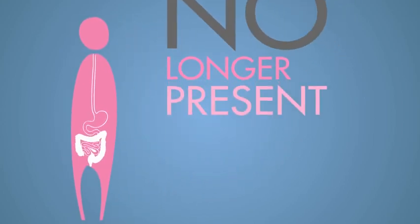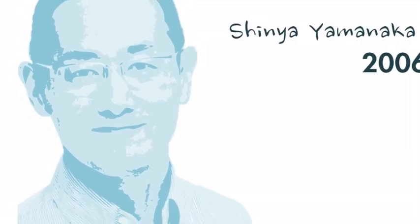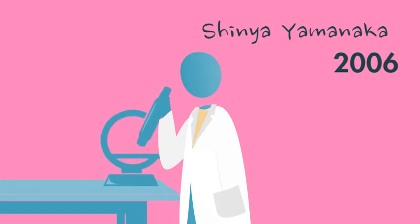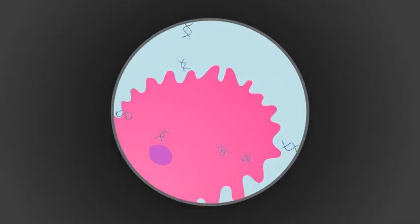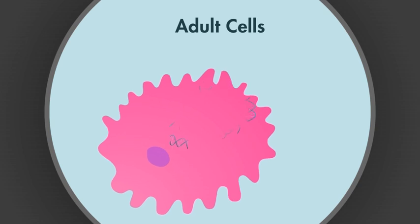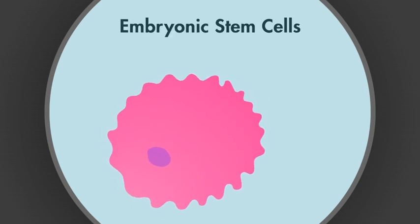They are no longer present in the adult organism. In 2006, scientist Shinya Yamanaka managed to convert differentiated adult cells into embryonic stem cells through a process called cellular reprogramming.